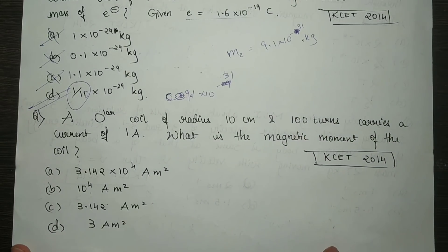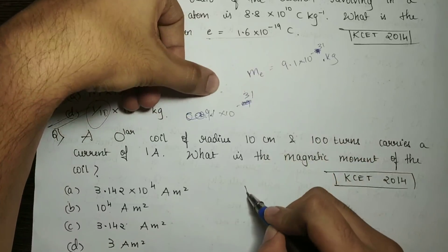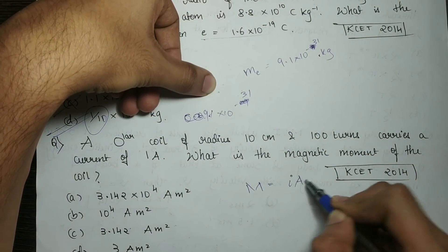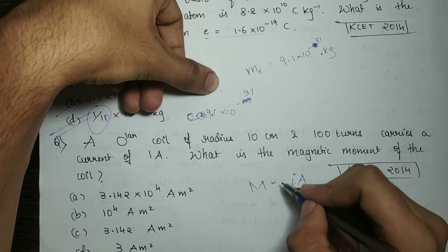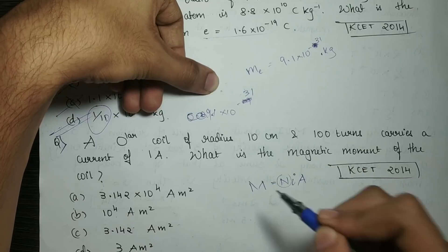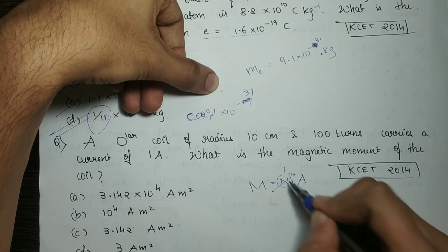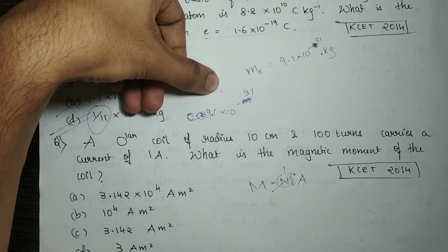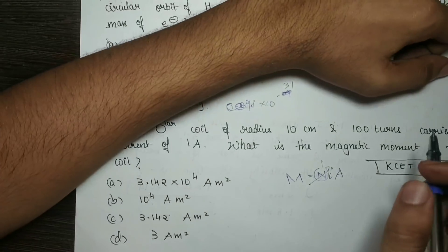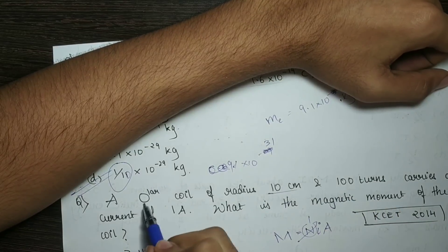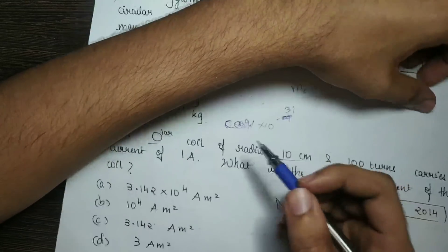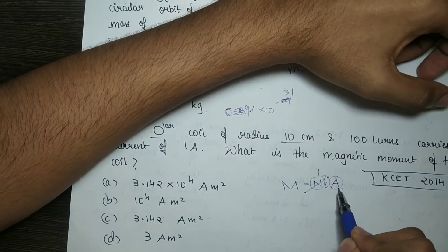Last question: a circular coil of radius 10 cm and 100 turns carries a current of 1 ampere. What is the magnetic moment? The magnetic moment is M = NIA, where N is the number of turns, I is the current, and A is the area of the coil. With radius 10 cm, the area is πr². Values check: N = 100, I = 1 A, r = 0.1 m.